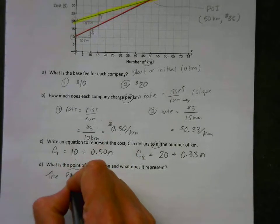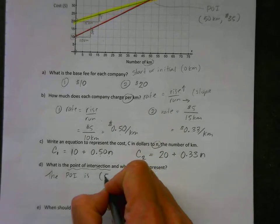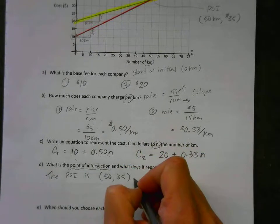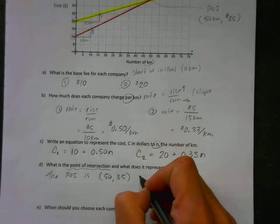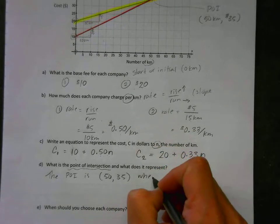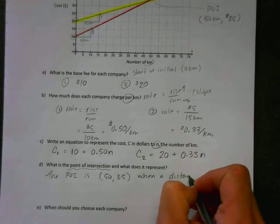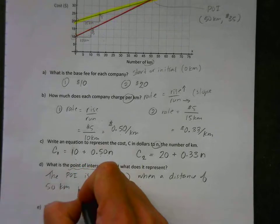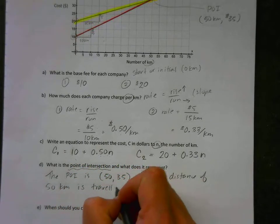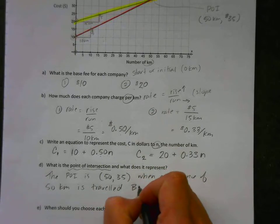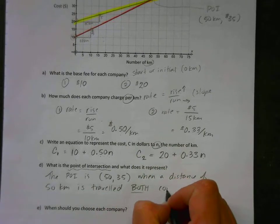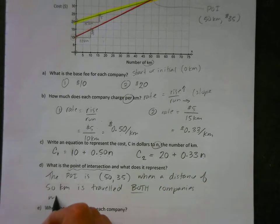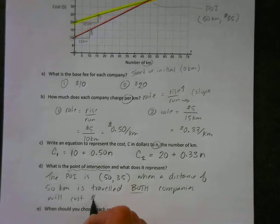So the POI, or point of intersection, is fifty comma thirty-five. That's just the math, but the explanation part is that when a distance of fifty kilometers is traveled, both companies will cost thirty-five dollars.